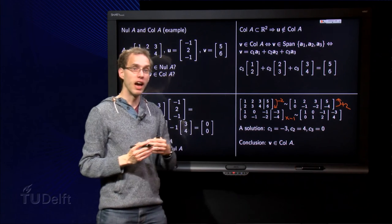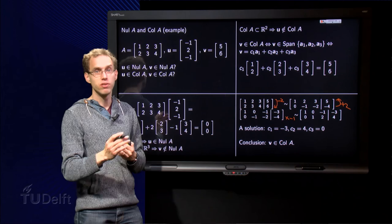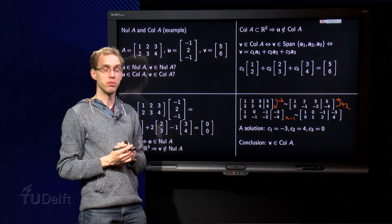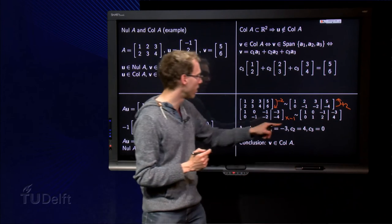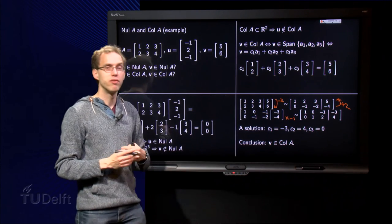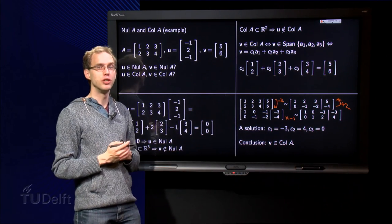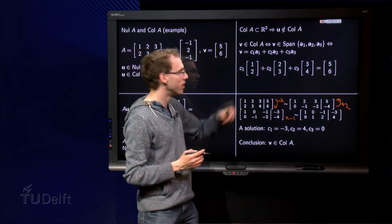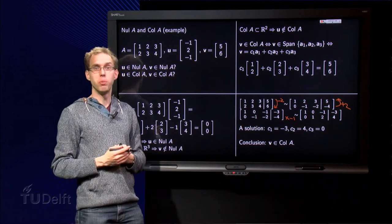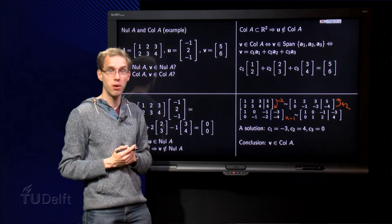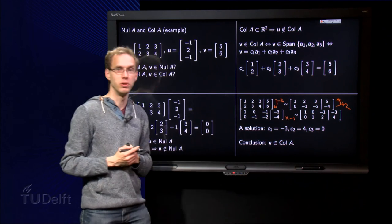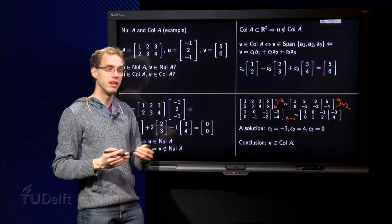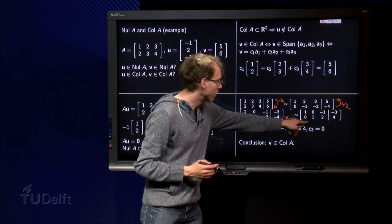We see that we have two pivots, three unknowns, so one of the variables is free. So we can take, for example, c3 to be free. And since we are looking for a solution of this equation, and we can choose c3 whichever we like, we can choose, for example, c3 equals 0, and then we find c1 equals minus 3 and c2 equals 4. So we can find the weights: minus 3, 4 and 0.